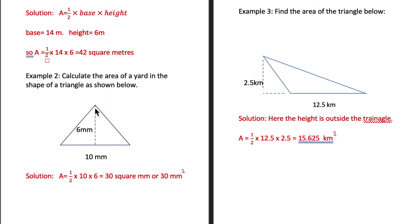The point here is that the height is not necessarily part of the triangle itself. The height is a line that we draw ourselves, or they give it to us, but the height is always a line which is perpendicular to the base — it makes a right angle with the base.